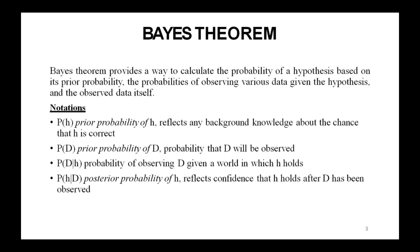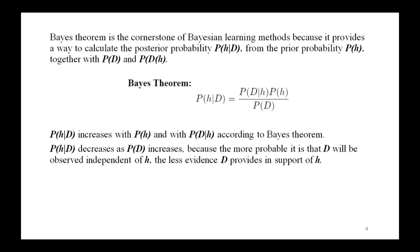These are the important notations in the Bayes theorem. Bayes theorem is one of the cornerstones and fundamental to Bayesian learning methods, because it provides a way to calculate the posterior probability P(H|D) from the prior probability P(H) together with P(D) and P(D|H). The Bayes theorem formula is: P(H|D) = P(D|H) × P(H) / P(D).